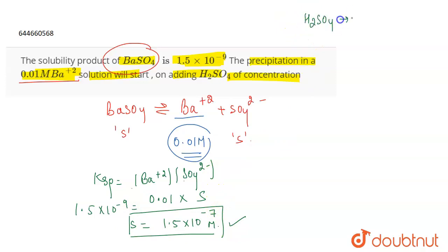Now if we talk about H2SO4, this dissociates to give 2H plus and SO4 2 negative. Now the solubility of SO4 2 negative ions is S, and as the stoichiometry of SO4 2 negative and H2SO4 is the same, the solubility of H2SO4 will also be S, and we just found out the value of S.